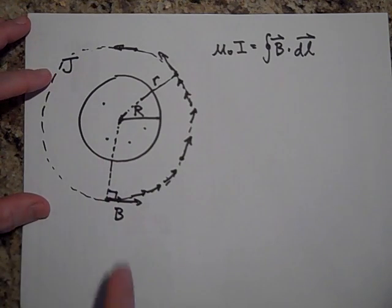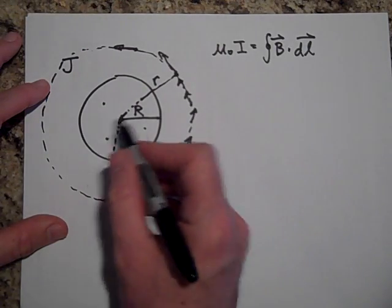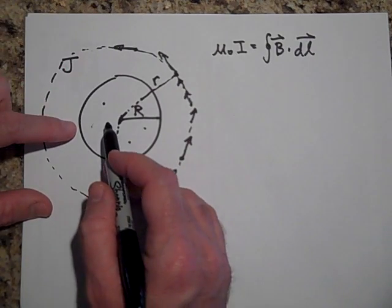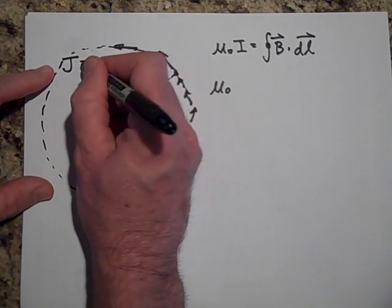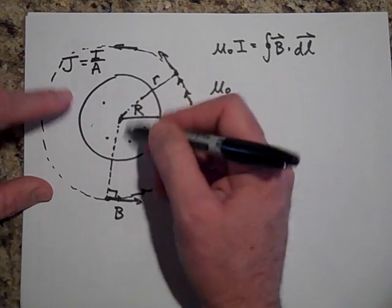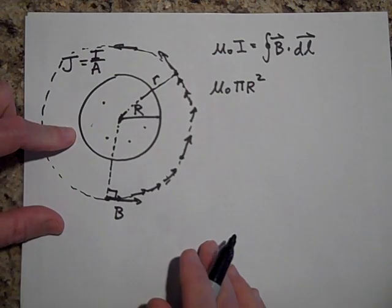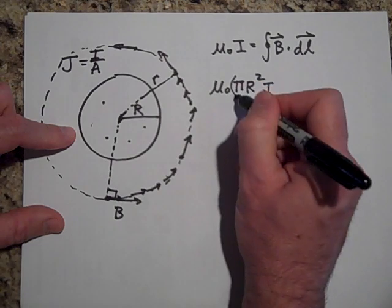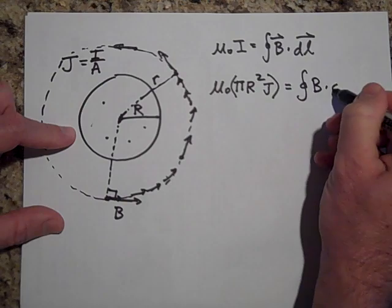Okay, so how much current is going through this Amperian Loop? Well, none, none is going here, is it? It's all on the inside here. So the current that's going through the Amperian Loop, it's only going to be μ₀ times. Now, since J is equal to I over A, it's going to be J times A, but I only want this area. So that's going to be π times big R squared times J. So it's J times the area that gives you the I. This is the I. And then that's equal to the closed loop integral of B dot DL.